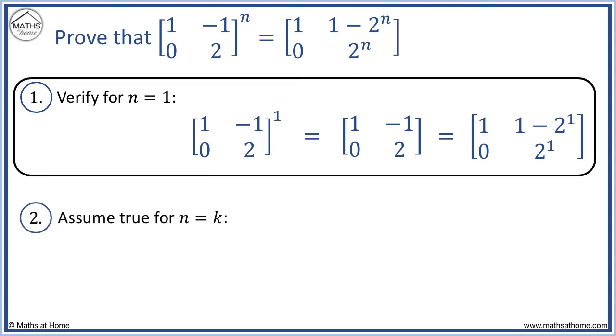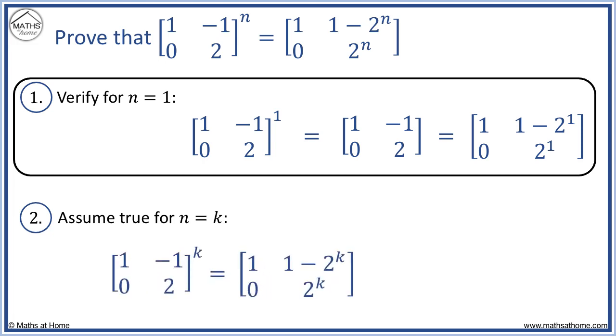Now we assume it is true for n equals k. That is, we substitute n equals k into both sides of the equal sign and assume they are equal.